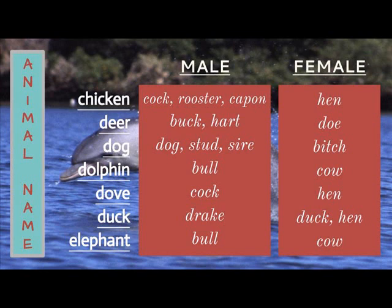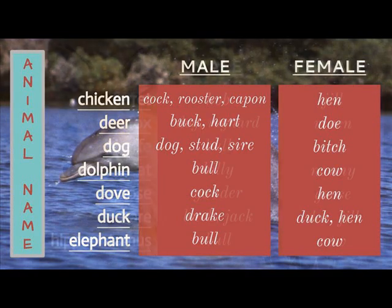A male dolphin is a bull, a female dolphin is a cow. A male dove is a cock, a female dove is a hen. A male duck is a drake, a female duck is either a duck or a hen. A male elephant is a bull, a female elephant is a cow.